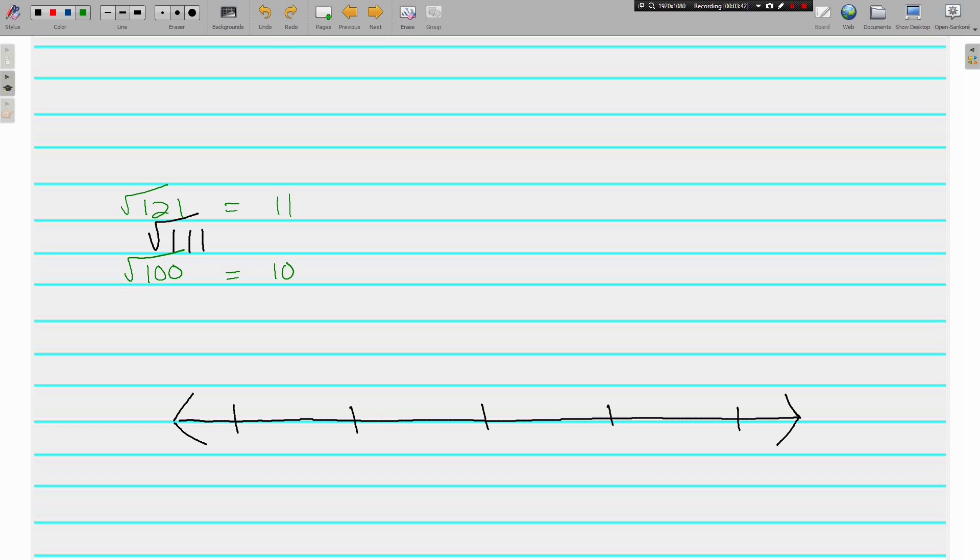What's it closer to? What is 111 closer to? Right here we are 11 away, that was supposed to be an arrow, and 121 to 111, we're 10 away. So here, we're actually closer to 121, so we're going to say the square root of 111 is approximately 11.